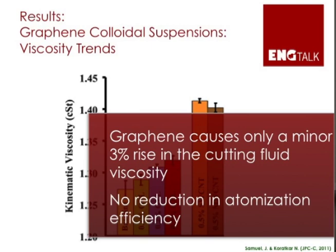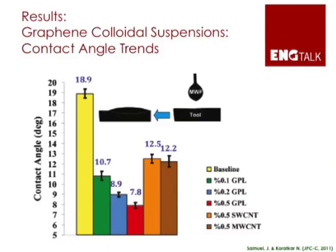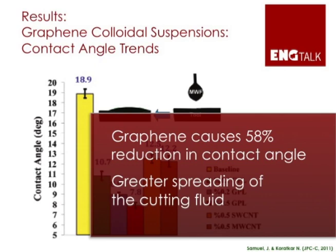This tells us we will be able to deliver this cutting fluid through the atomization system without any loss in atomization efficiency, which is exactly what we were hoping to achieve at the onset. We were also interested in how graphene changes the spreading behavior of the micro-droplet as it touches the tool and workpiece interface. Looking at contact angle trends, we find there is a reduction in the contact angle of the cutting fluid with the workpiece as graphene concentration increases — a 58% reduction — which causes greater spreading of the cutting fluid onto the surface.